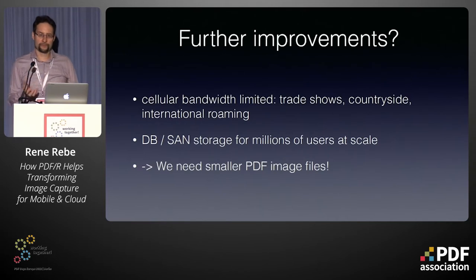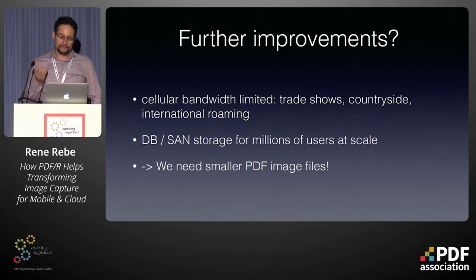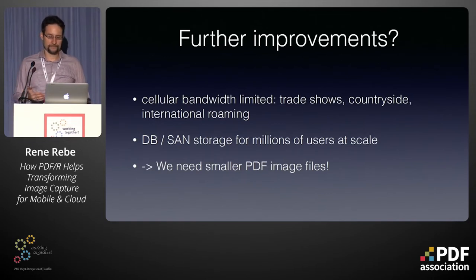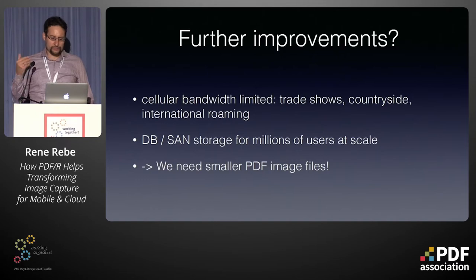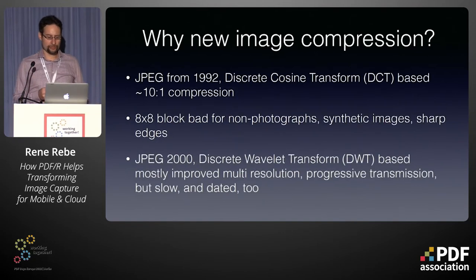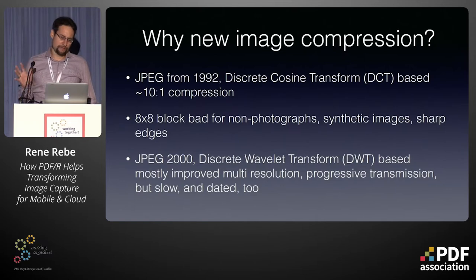Why do we want further improvements? Right now the best compression in PDF is JPEG. But with cellular bandwidth — network scanning is often limited, whether at hotels, trade shows, international roaming, or salespeople traveling — you don't always have the bandwidth to send very large files. And database storage, storage area networks, storing millions of users at the scale of Apple, Google, and Microsoft — data adds up. Smaller files are better. Currently, JPEG from 1992 uses discrete cosine transform (DCT), about 10-to-1 compression ratio in useful cases, working on fixed 8×8 macro blocks. It performs poorly on non-photographic content like synthetic images, sharp edges, tables, and graphics. JPEG 2000, as the name implies, is from 2000 — 22 years old — using discrete wavelet transform (DWT), relatively exotic, mostly improving multi-resolution progressive transmission, but also slow.